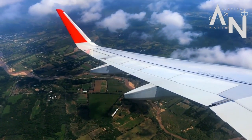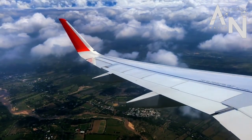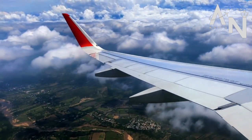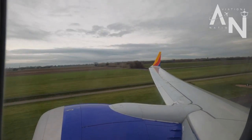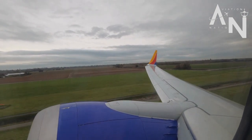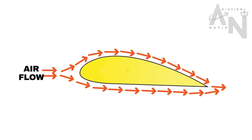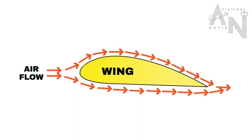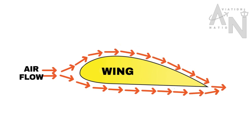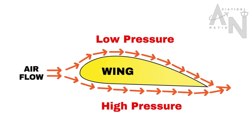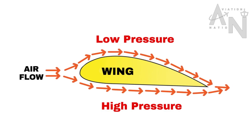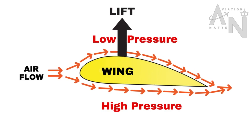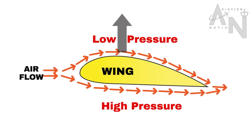Lift is the force that allows an airplane to rise into the air and stay there. It is generated by the wings of the airplane, which are designed to produce lift by manipulating the airflow over their surface. The shape of the wing, called an airfoil, is specifically designed to create a pressure difference between the top and bottom surfaces of the wing. This pressure difference creates an upward force on the wing, which is what generates lift.